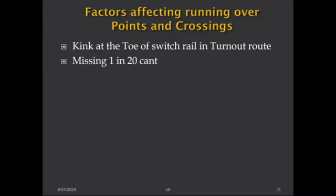The approach track has 1-in-20 cant, but over about four to five sleepers approaching the points and crossing, the cant is gradually eased out to zero. After the heel of crossing, the cant is again gradually introduced. So 1-in-20 cant is not provided in the points and crossing area, which is another factor affecting running quality.